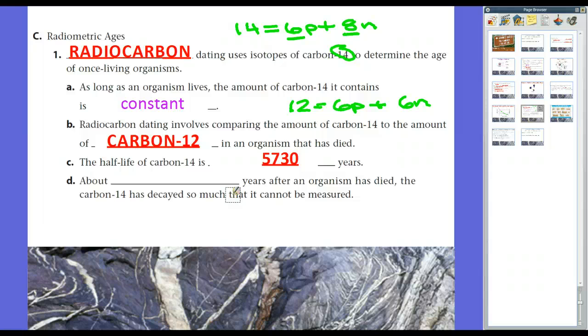And radiocarbon dating involves comparing the amount of carbon-14 to the amount of carbon-12 in an organism that has died. And because the radioactive decay is constant, we can figure out the point where it becomes 50-50 between carbon-14 and carbon-12. And the half-life of carbon-14 is only 5,730 years. So, for things that are really recent, radiocarbon dating is really useful. Because, you know, we can determine the half-life. However, after about 50,000 years, after an organism has died, the carbon-14 has decayed so much that it can't be measured. So radiocarbon dating is only useful for about 50,000 years in the past.